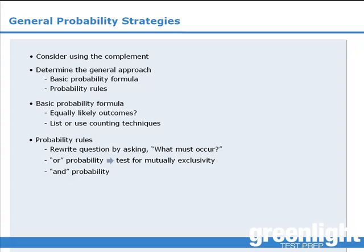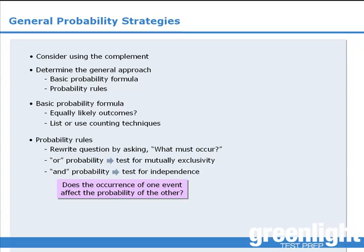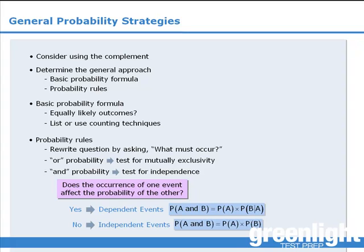If the solution involves an AND probability, determine whether the events are independent by asking, does the occurrence of one event affect the probability of the other event? If the answer is yes, then the events are dependent, and you should use this formula. If the answer is no, then the events are independent, and you should use this formula.